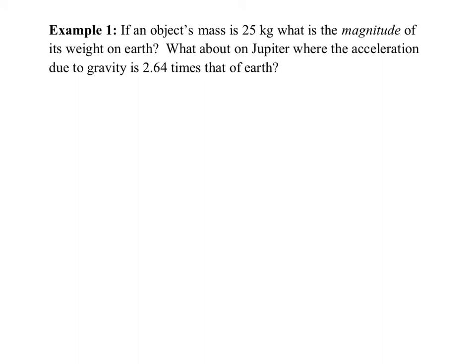In this first example, we've got an object whose mass is 25 kilograms. The question is: what is the magnitude of its weight on Earth? And then, what about on Jupiter, where the acceleration due to gravity is 2.6 times that of Earth? We'll start with our givens: we have a mass of 25 kilograms, and gravity on Earth is 9.8 meters per second squared.